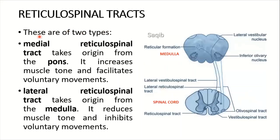Next is the reticulospinal tract, which is also of two types: medial and lateral. The medial reticulospinal tract takes its origin from the pons. The reticular formation lies in the brainstem, mainly in the medulla and pons. The lateral reticulospinal tract takes its origin from the medulla.